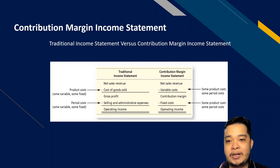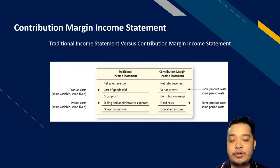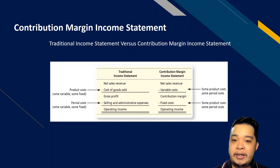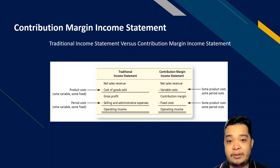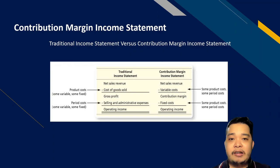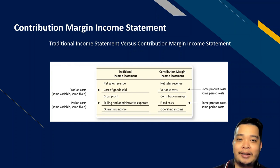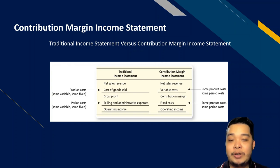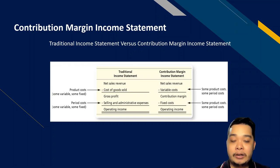In the traditional income statement, the focus is the computation of gross profit — sales minus cost of goods sold, less selling and admin expenses, to arrive at operating income. In the contribution margin income statement, the focus is the contribution margin: sales minus all variable costs (regardless of whether product or period cost) to show the contribution margin, then less all fixed costs to show operating income.